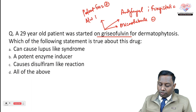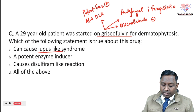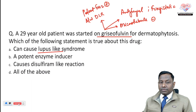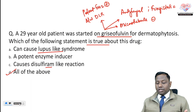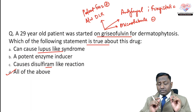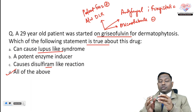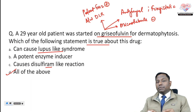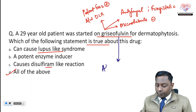Griseofulvin is also associated with a disulfiram-like reaction due to inhibition of aldehyde dehydrogenase, and it is linked to lupus-like syndrome. If the examiner asks which of the following is true, all of these properties apply. Note that ketoconazole is an antifungal with enzyme-inhibiting property, whereas griseofulvin has enzyme-inducing property. Also, griseofulvin absorption is increased with a fatty meal.